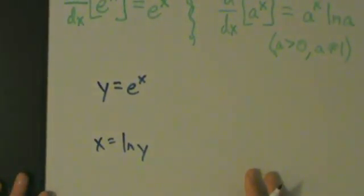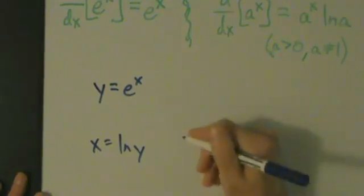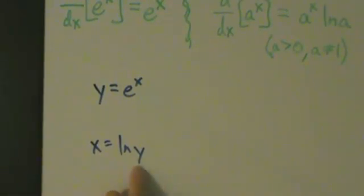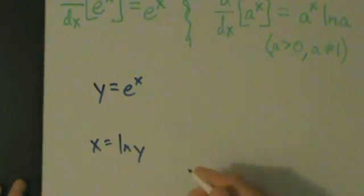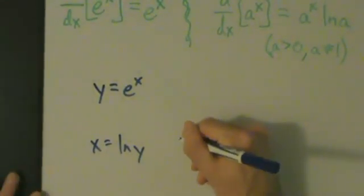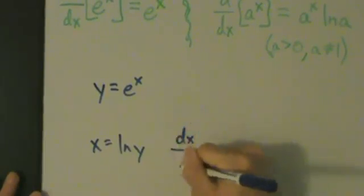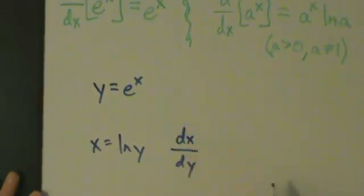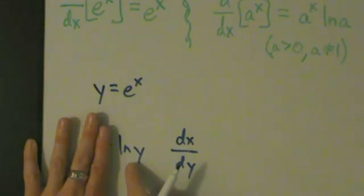So inverse functions here. So x equals the natural log of y, and that means that, so if x is the natural log of y, and then here we're expressing x as a function of y, so we can take the derivative of x with respect to y. In other words, dx dy, so we can think of this as a function of y, f of y, and then we'll have f prime of y.